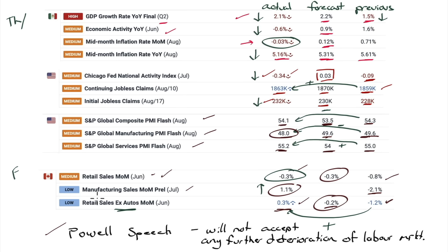Whether we're going to get 50 basis points or not — it doesn't feel like it's this Fed. I think they'll start with 25. Starting with 50 out of the gate sends kind of a negative signal, and I don't think they want to do that. They may go 50 at some future meetings, but I think this first one for September is a 25, which means some of the reaction we've seen in the market off the Powell speech is premature and will more than likely retrace.